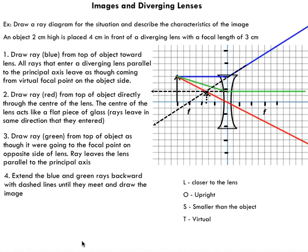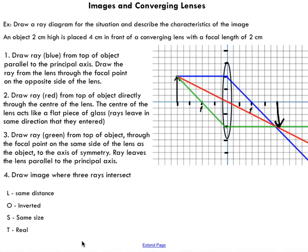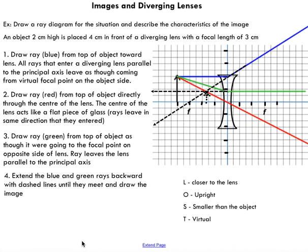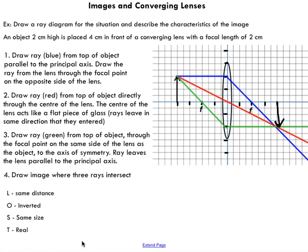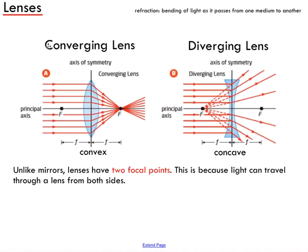That's the idea for drawing converging and diverging lens ray diagrams to predict what images are going to look like — a very similar procedure to concave and convex mirrors, but taking into consideration the lens properties discussed at the beginning of this video lesson.